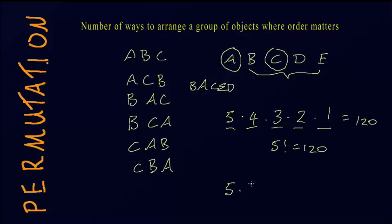5 people can come in first, 4 people can come in second, 3 people can come in third, 2 people can come in fourth. It's the same as if we multiply this by 1, 120 as well.